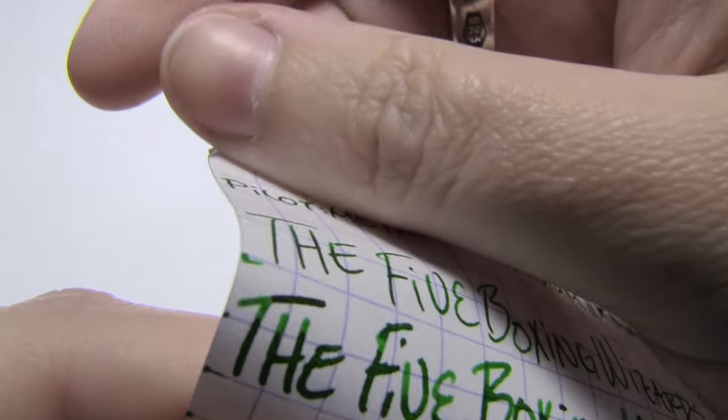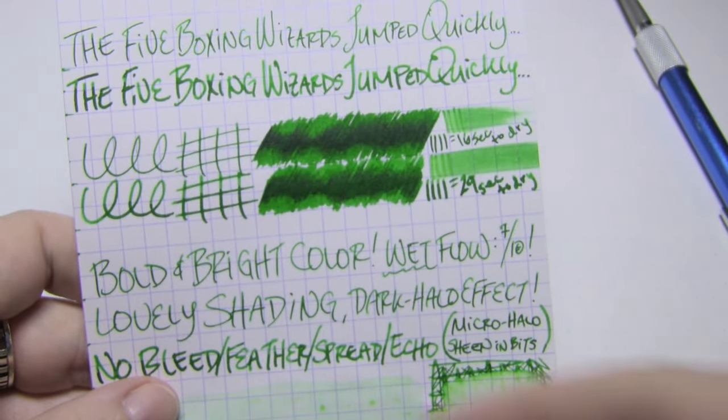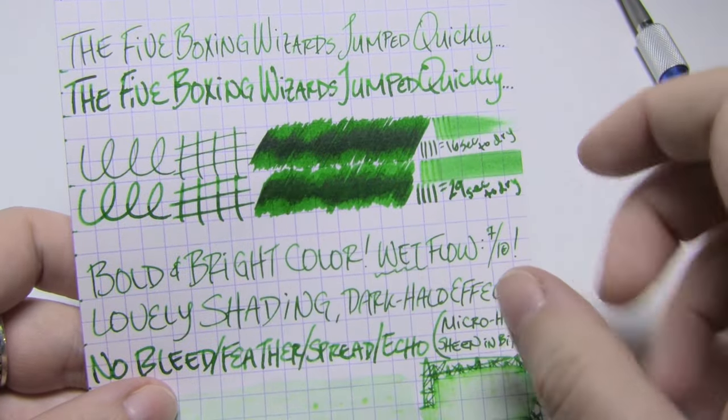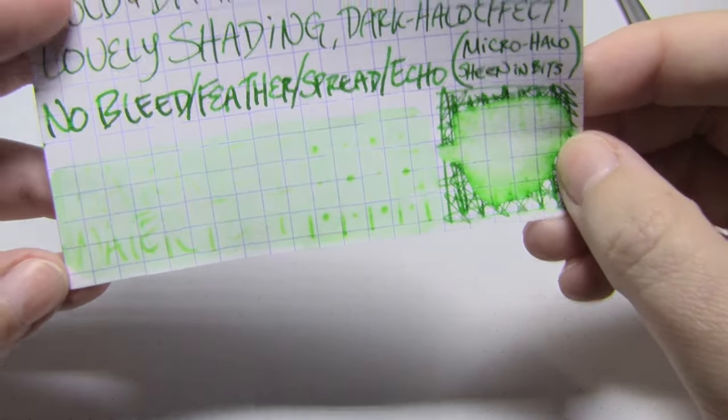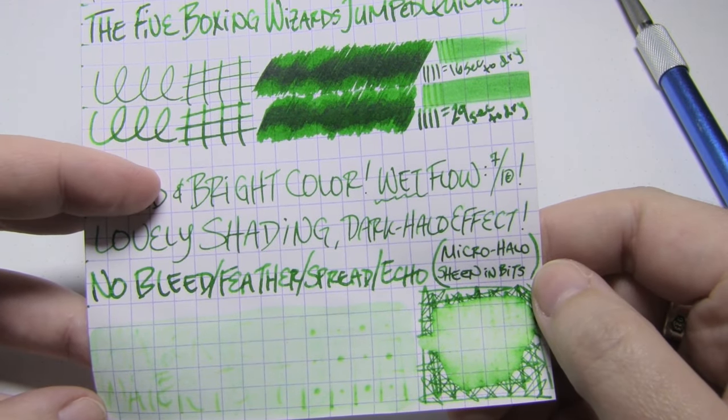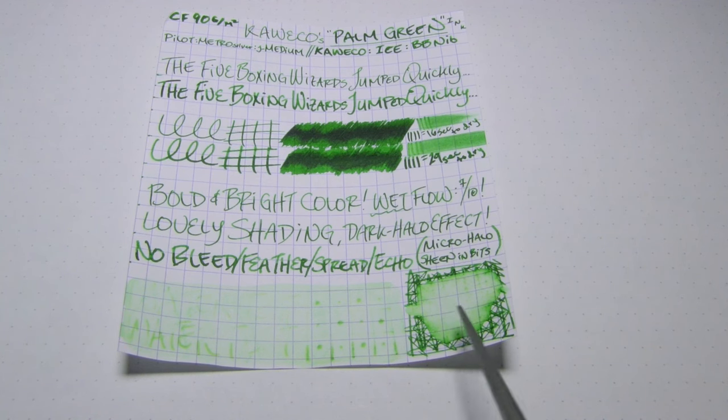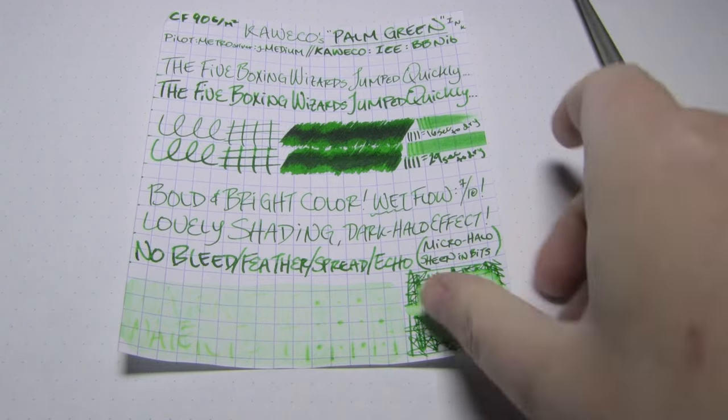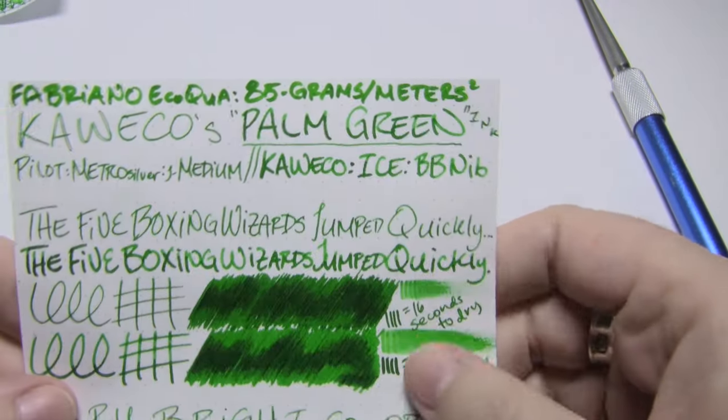But we do get some lovely shading. We do get a bit of a dark halo effect around the wettest parts. Especially in that double broad, because it's putting down more ink. And I really hope the camera will let me show you this. There's a vague little hint of red sheen there. It's a bright bold color. It's a bit wet flowing. You get halo effect around the wettest parts. You get barest little hints of a shiny dark red sheen. No, there's no bleed, no feather, no spread. No echo. There's sheen, but only a little bit, and only in the halos. There's essentially no water resistance.